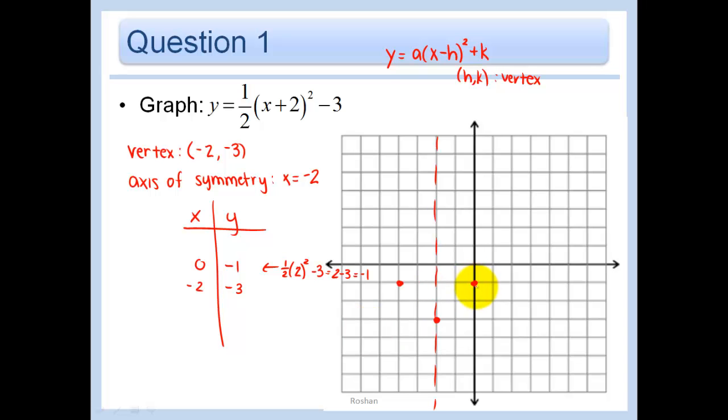Let's just go ahead and find one more point for good measure. Let's just do 2. So if we put in 2, we would get 1 half, 2 plus 2 is 4, squared minus 3. 4 squared is 16, and 16 divided by 2 is 8, minus 3 is just 5. From our axis of symmetry, we went over 4 units this way. So if we go over 4 units that way, that should also be a point. And there's our parabola.